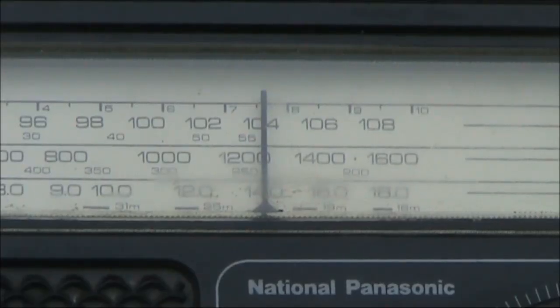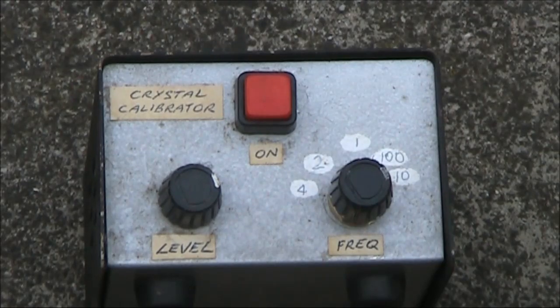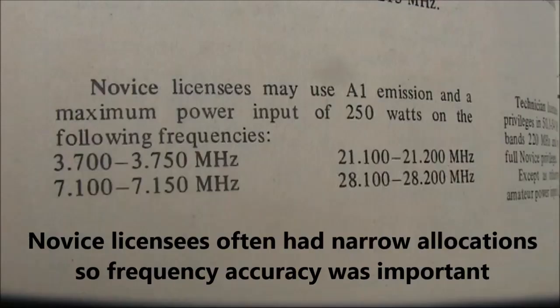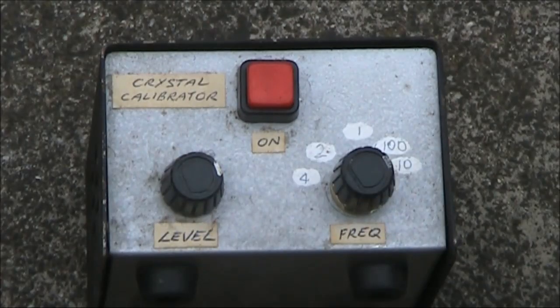And even if your dial resolution was okay, accuracy, which is what you really wanted, was another thing. The dial might read spot on, but if the VFO has drifted, then you'll still be on the wrong frequency. Being on frequency is not just a nice to have, but also a must to have, especially if you held a novice license. How do you know you're a spot-on frequency?